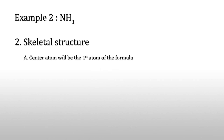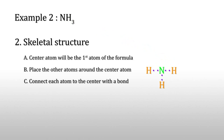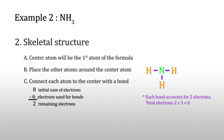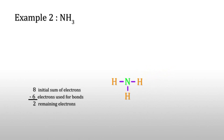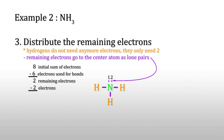Now for the skeletal structure: write the center atom, which is N. Then place the other atoms — the three hydrogens — around the center atom, like this. Connect each atom to the center with a covalent bond. Each bond accounts for two electrons; total six electrons used. The remaining two electrons are distributed onto nitrogen.